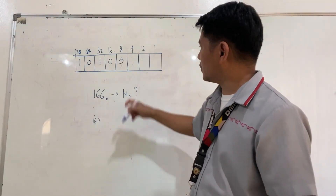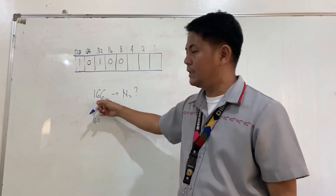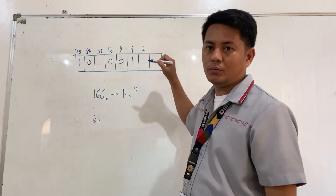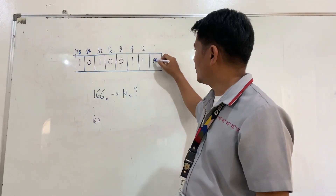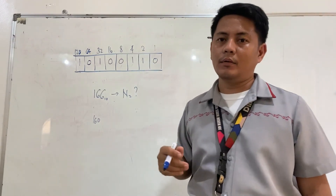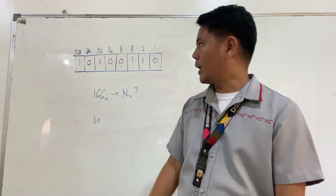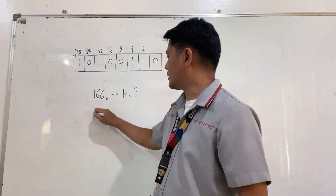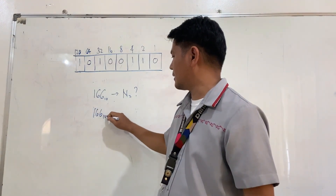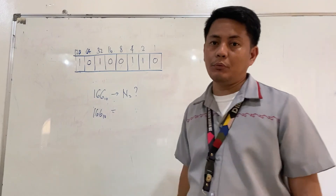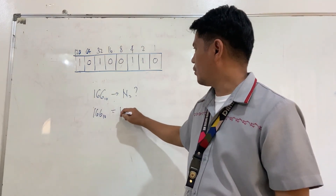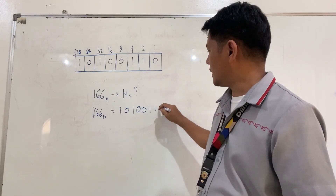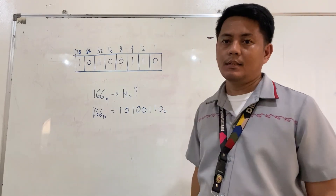How about 4? Since we only need 6, we need both 4 and 2 — turn both to 1. We do not need 1 to obtain the sum of 166. Therefore, our answer is 166 base 10 is equivalent to 1, 0, 1, 0, 0, 1, 1, 0 base 2.